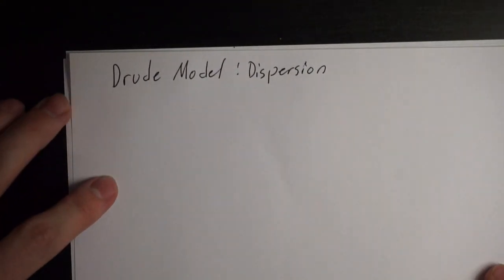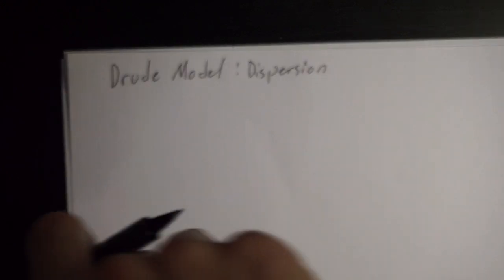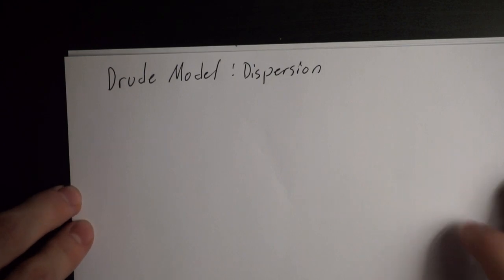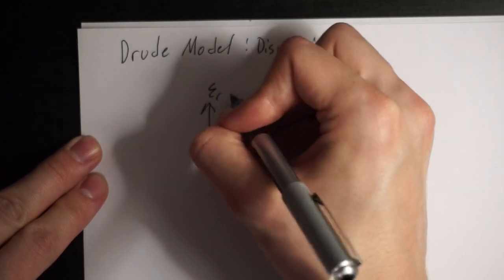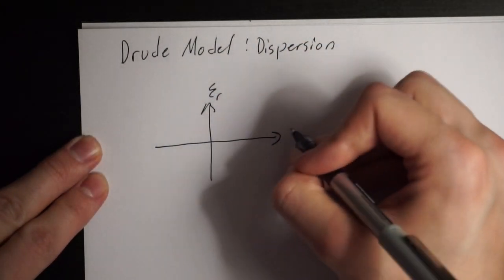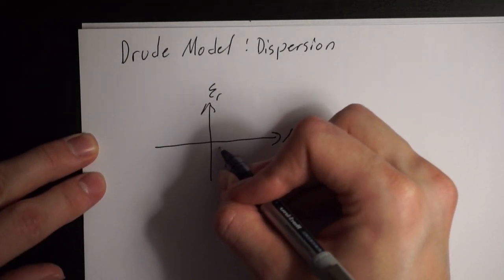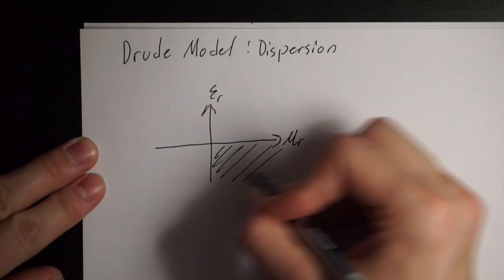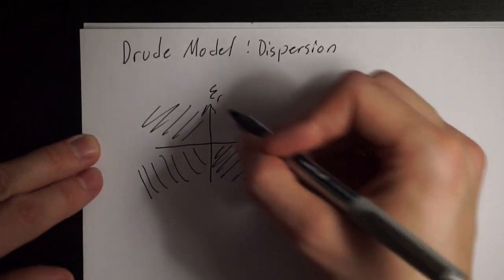This model was developed by Paul Drude in 1900 and it describes the properties of metals when an electric field is propagating through it. Looking at this graph, this model is meant to represent materials with negative permittivity, negative permeability, or simultaneously negative permittivity and permeability.